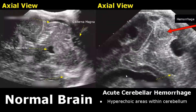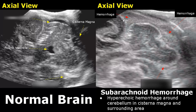This is a case of acute cerebellar hemorrhage — hyperechoic bright areas are seen within the cerebellum. Subarachnoid hemorrhage can also be visualized on ultrasound; in some cases we will find hyperechoic hemorrhage around the cerebellum in the cisterna magna.